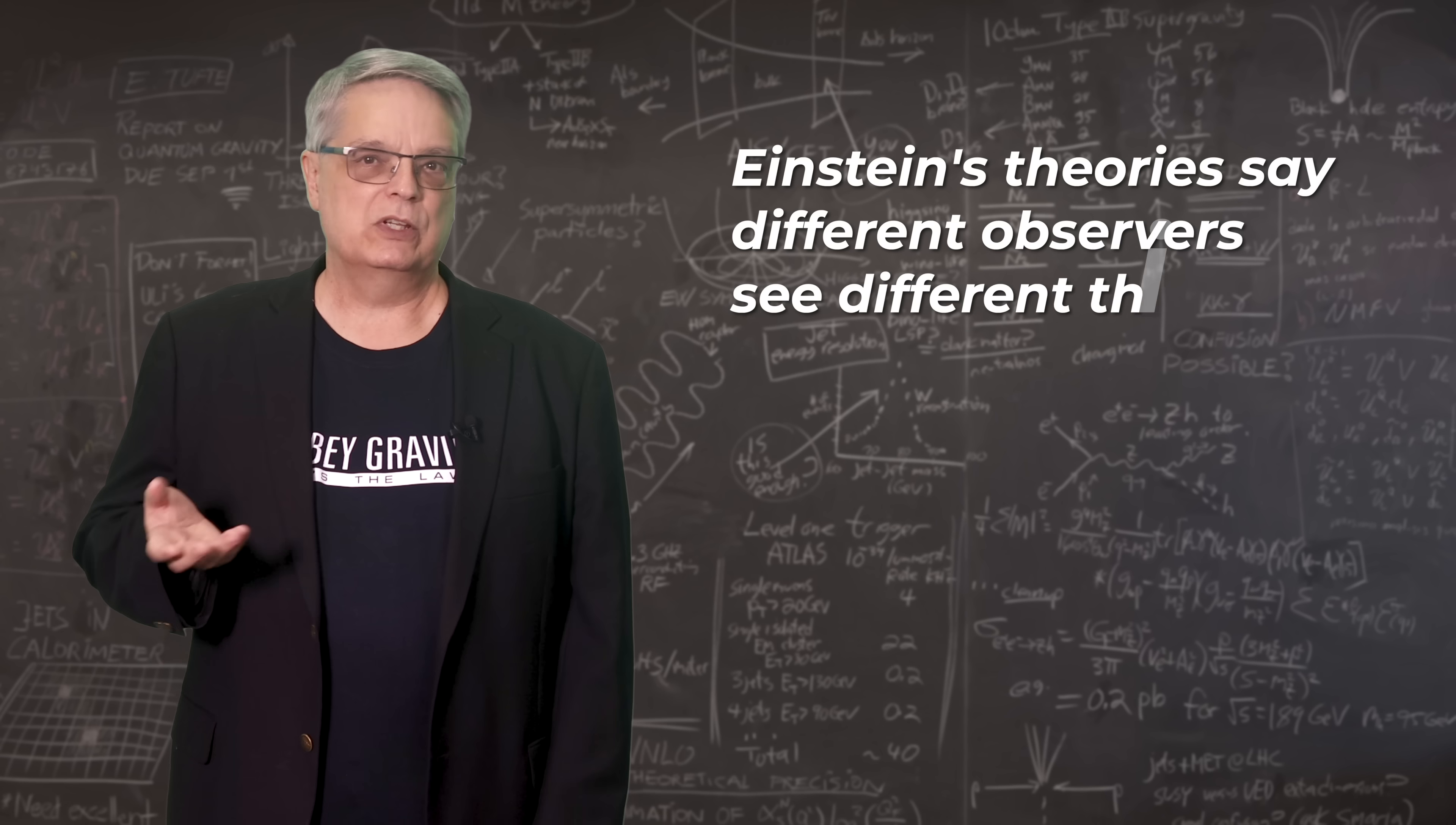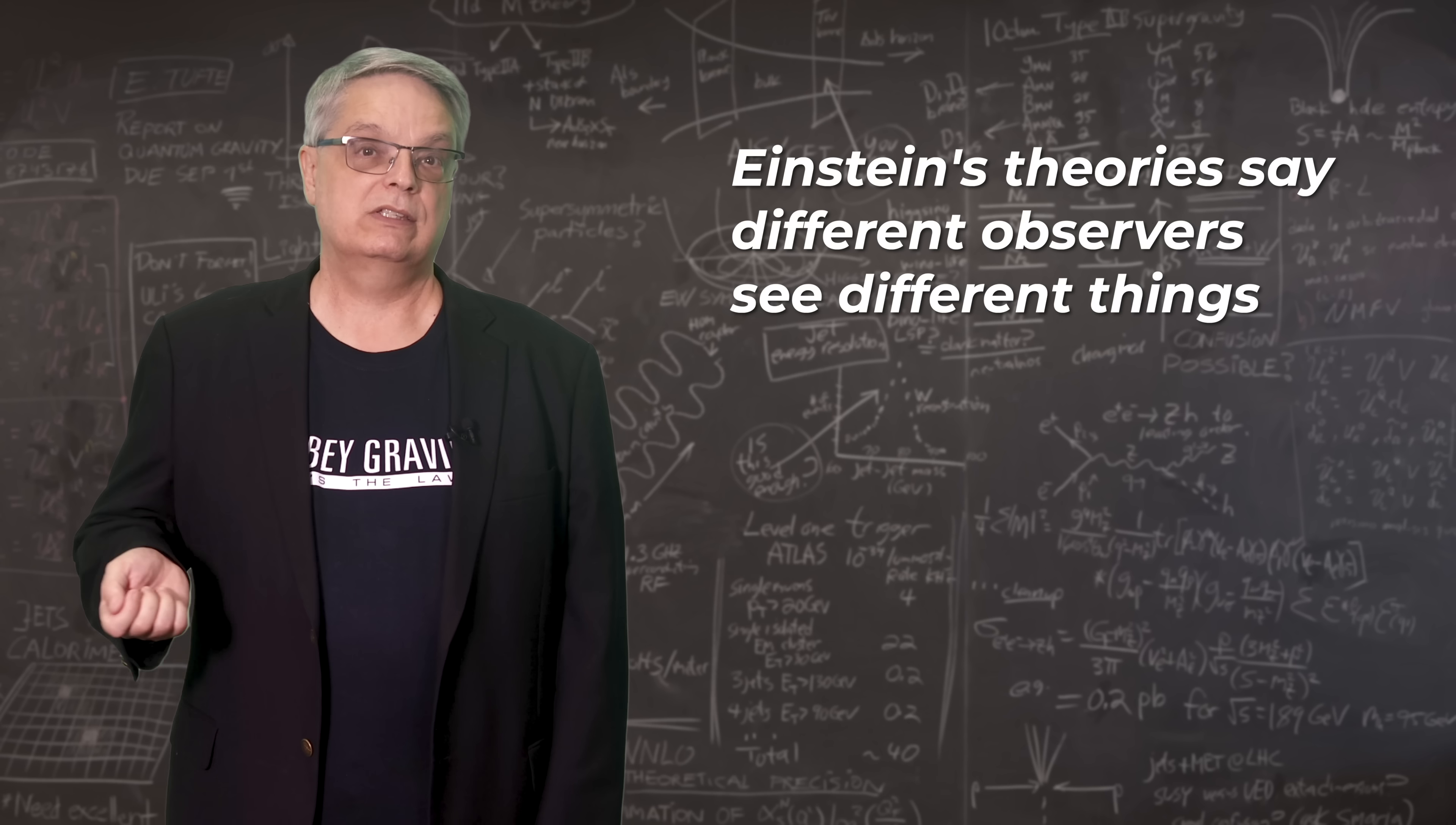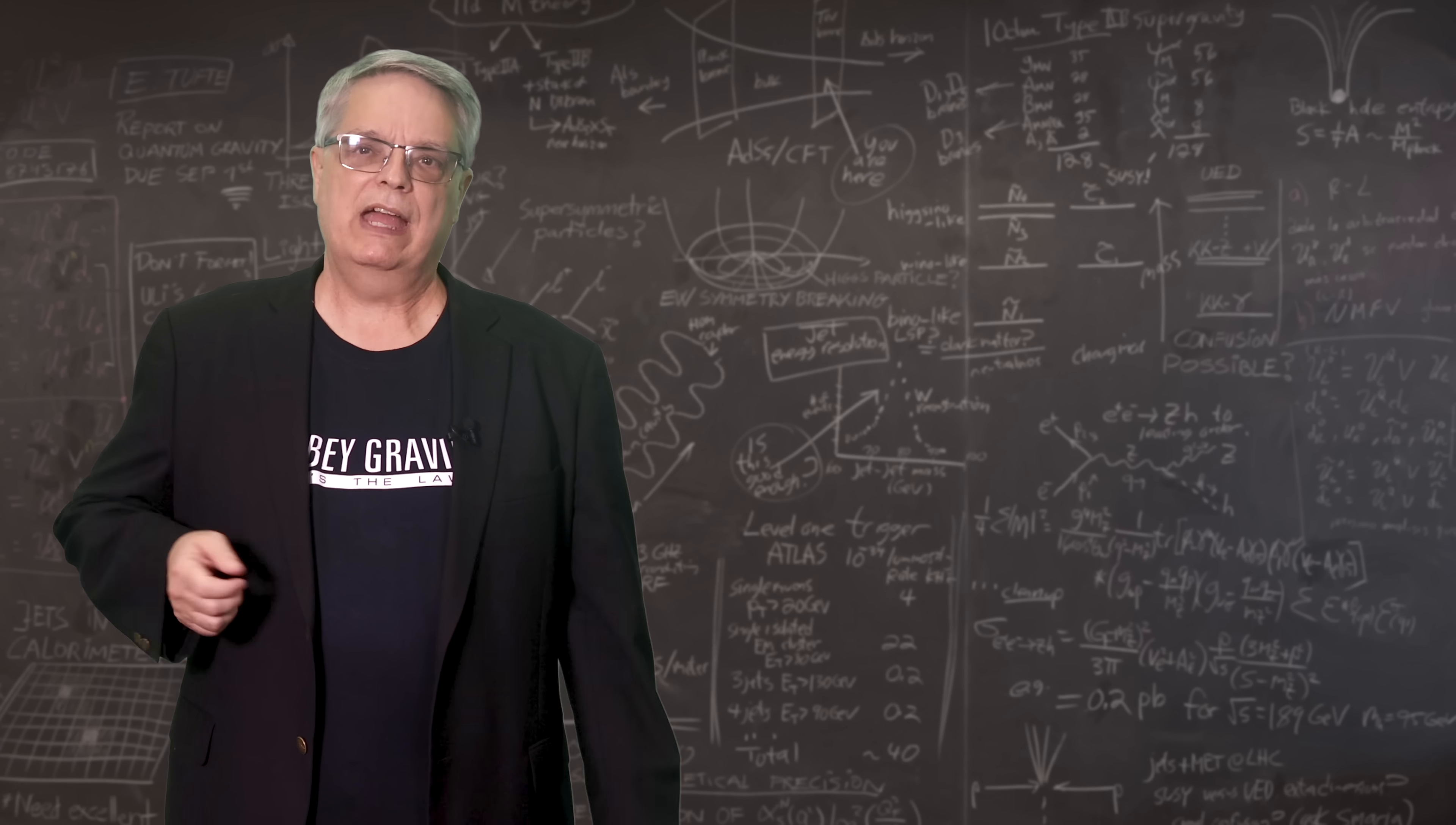We all know that Einstein's special theory of relativity says that two observers who are moving at different speeds will disagree about how fast two clocks tick and how long two objects are. The theory of general relativity includes all that and more.